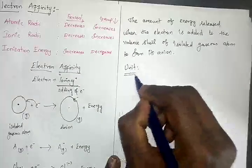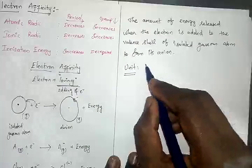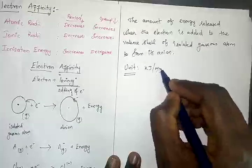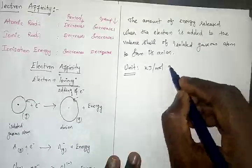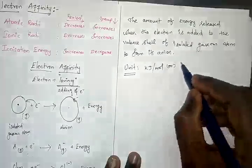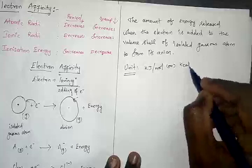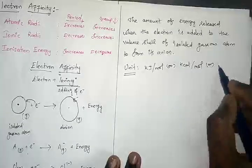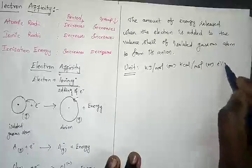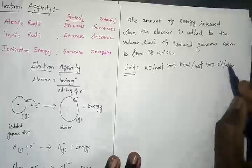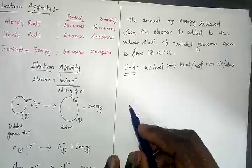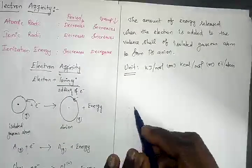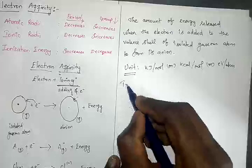The unit of electron affinity is very similar to ionization energy. It is measured in kilojoules per mole, or kilocalories per mole, or electron volts per atom. Now let us see the trend in the periodic table.